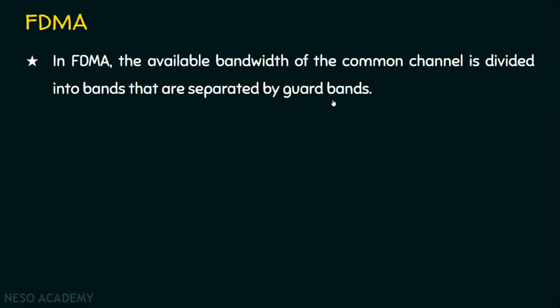For example, if we have a common channel, we don't just send data freely — the entire bandwidth is divided into bands. If there are five stations, the entire bandwidth is divided into five user bands, and each user band is assigned to each station so that all stations can transmit data simultaneously. You may ask: what if two bands are very near? It leads to collision or overlapping. To avoid this, each user band is separated by some guard bands.